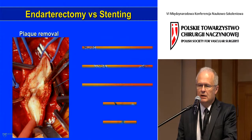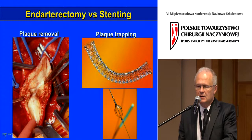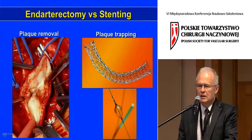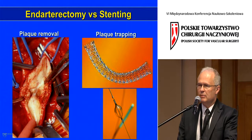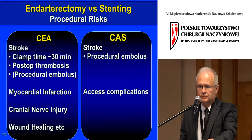Stenting, on the other hand, is plaque trapping — we trap the plaque with the stent and wait until it is endothelialized. We use thromboembolic protection because at this time there is a relatively high risk of embolic complications. It's worth reminding you that stroke in patients with carotid disease is mainly related to embolization; probably less than five percent of cases are related to total occlusion of the carotid artery.